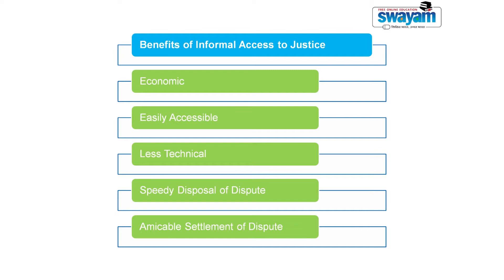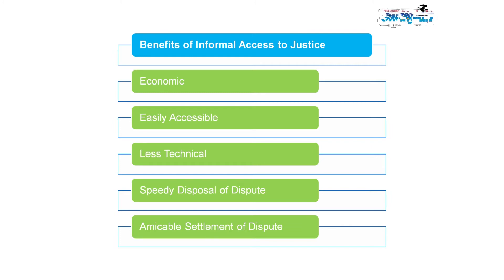Another advantage of the informal access to justice system is that it is easily accessible. It need not follow any technical procedure, and it generally disposes of a dispute on the basis of justice, principle, and equity. So it is within the understanding of the litigant who refers their dispute to such a dispute resolution mechanism.